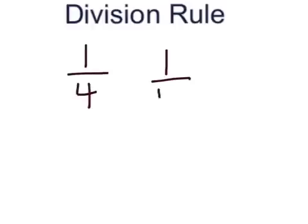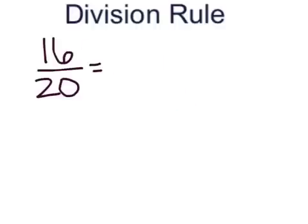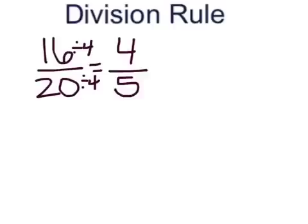Now let's talk about the division rule for finding equivalent fractions. Sometimes you will be given a fraction that is not a unit fraction, meaning it won't be one over four or one over twelve — basically, it won't have a one for the numerator. Let's look at the fraction sixteen-twentieths. The division rule states that in order to find an equivalent fraction, you divide the numerator and the denominator of the fraction by the same number. Since I know that both 16 and 20 are evenly divisible by four, I am going to divide the top and the bottom by four. Sixteen divided by four is equal to four, and twenty divided by four is equal to five. So an equivalent fraction for sixteen-twentieths is four-fifths.